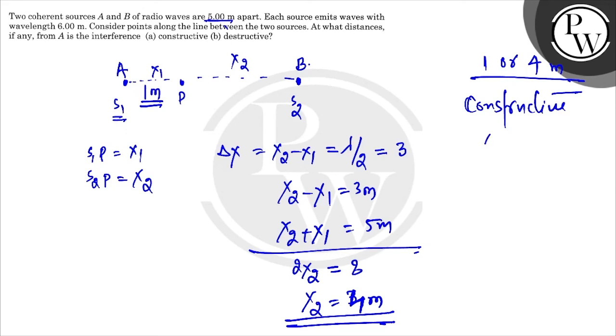And what about constructive? For constructive, the path difference should equal zero, so x1 equals x2, which equals 2.5 meters. So the right answer is 1 or 4 meters for destructive, and for constructive 2.5 meters. All the best.